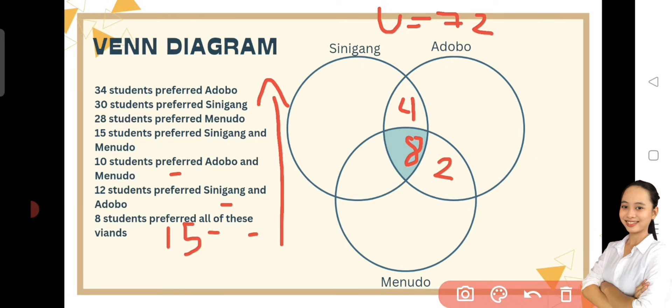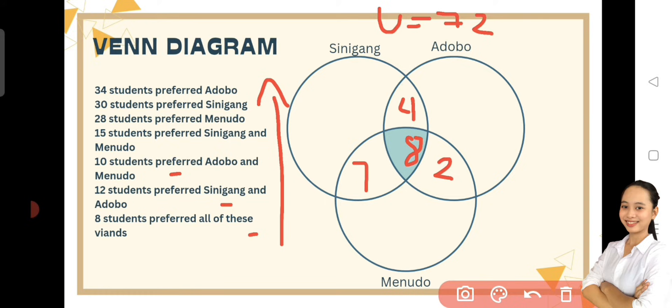Ngayon naman, proceed na tayo sa 15 students preferred Sinigang and Menudo. Dating gawin, imaminus natin yung 8 kasi intersection siya ng lahat. Kaya 15 minus 8 is equals to 7.